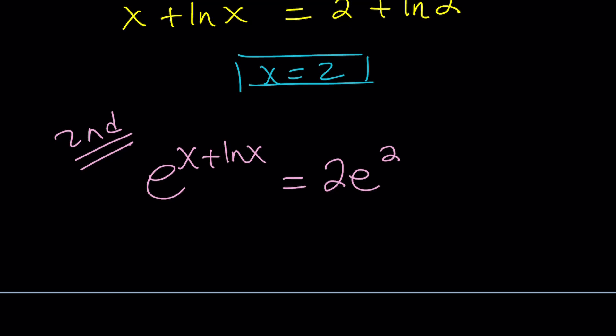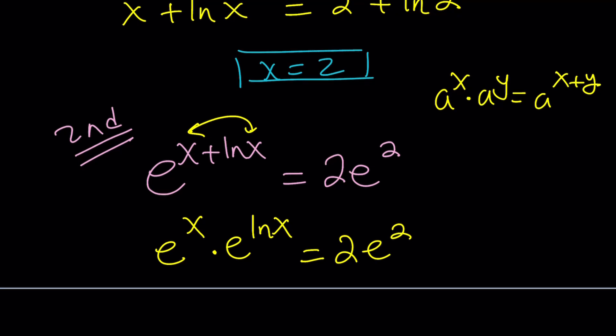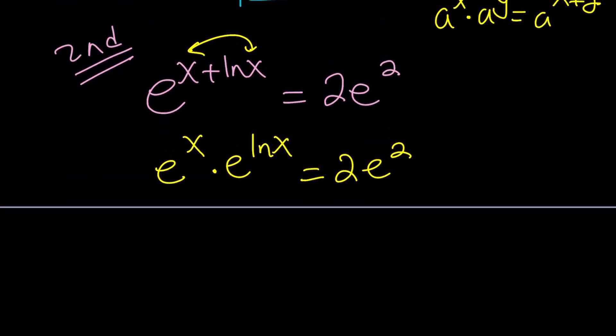Now, the second method is basically separating the exponents. What is the rule for multiplication? A to the x times a to the y equals a to the power x plus y. Just like division, when you multiply powers with the same base, you add the exponents. And if the exponents are added, you can always reverse engineer this and write it as e to the x times e to the ln x. I know I kind of made a big deal out of it, but this is actually reverse engineering. So, kind of reversing the process. It's not always easy, by the way.